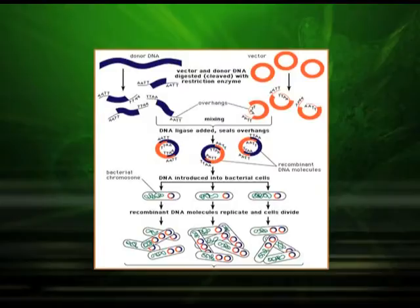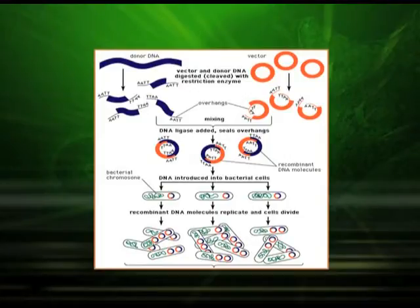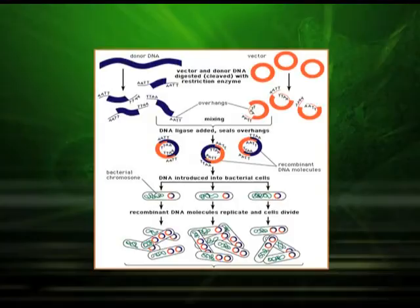The next diagram shows how the DNA is cloned. The donor DNA is split into fragments and attached to the vector using the enzyme DNA ligase. It is then introduced into a host cell — specifically bacterial cells. When the bacteria replicates, the recombinant DNA molecules also replicate, and in this way you have a clone of DNA molecules.